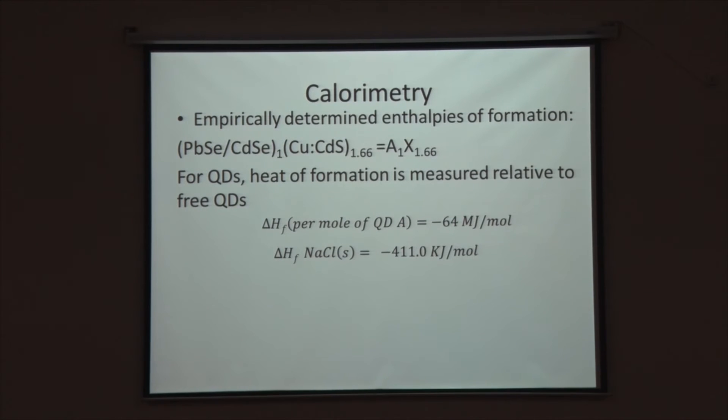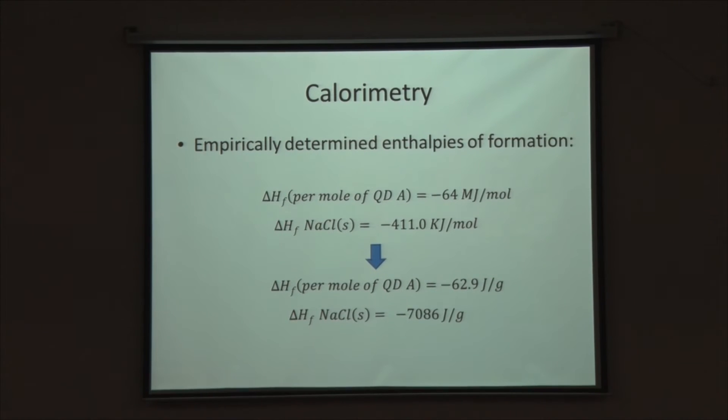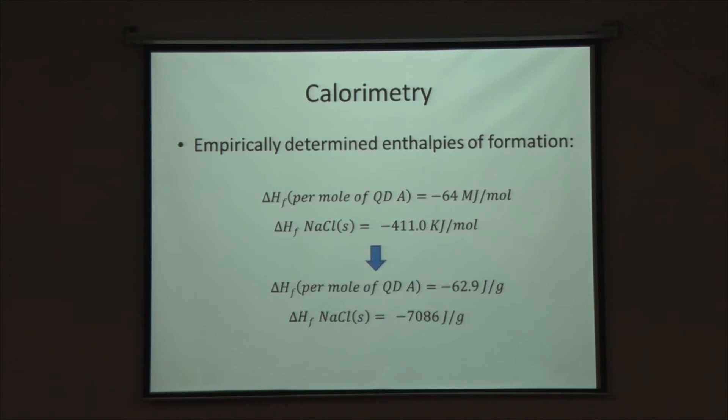Before we start changing our minds, looking at these numbers it sounds very tempting. Let us just start using quantum dots to run cars and watches and batteries and so on. That is actually not such a productive idea because in some sense these numbers are misleading a little bit. The reason is these are per mole of quantum dot. Quantum dots are large massive objects. If I were to divide them by the appropriate masses, these numbers look a lot less fantastical. They are simply 62 joules per gram of quantum dot. If I compare this with sodium chloride, I am dealing with 7000 joules per gram. So there is still no reason to use them as fuels but certainly if you think of them as a single unit or entity, these numbers are massive.